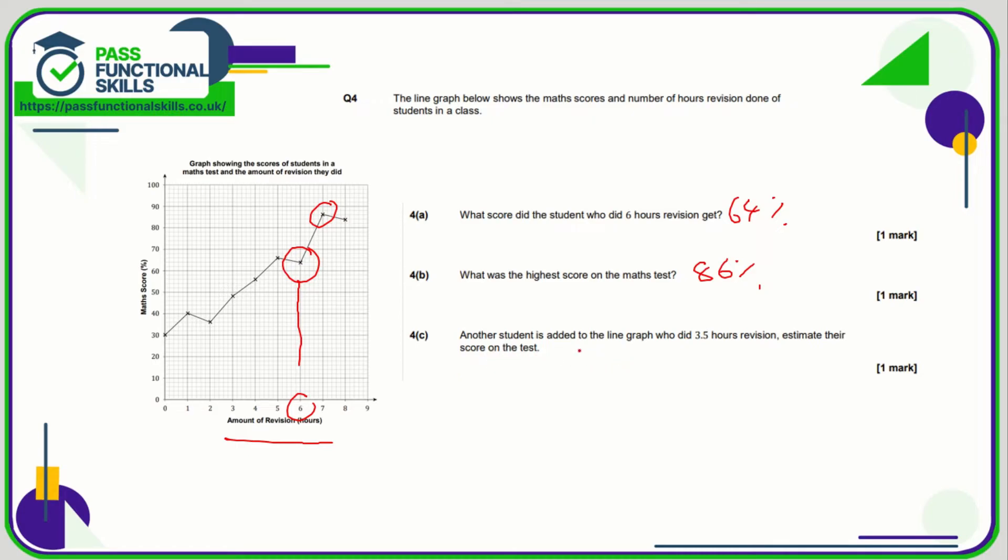And another student is added to the line graph who did three and a half hours of revision. Estimate their score on the test. Well three hours gives us this amount of revision and four hours gives us this amount, so we can estimate that someone who did three and a half would get whatever this corresponds to here. So where we hit the line from three and a half hours we're just going to take that reading across and I make it, well it's hard to tell because we ideally would need to zoom in a little bit, but I would say that's 52 percent. But any exam board would accept a range of answers if there was any doubt, so I'm going to stick to 52 percent for that one.